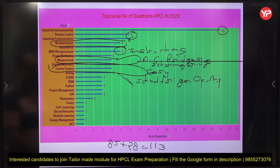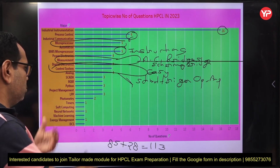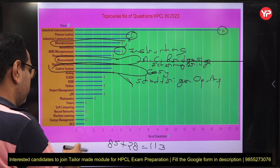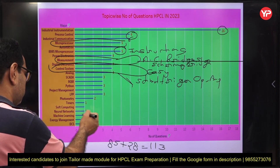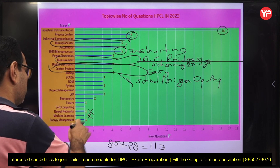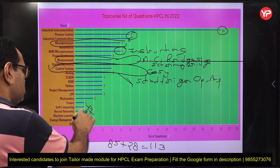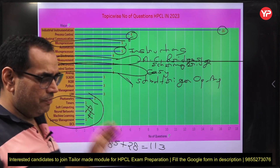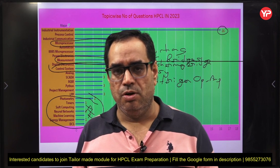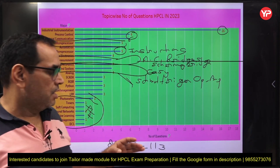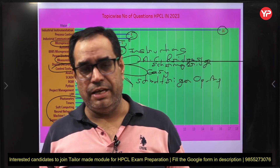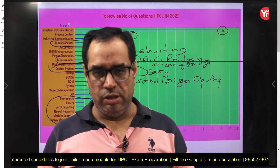SCADA is good to prepare since it's required in industry. For Python, it's a big subject so it's your choice. Don't go with machine learning — only one question and it's a vast subject. You can also ignore neural network and soft computing. Focus on the main topics discussed — follow this strategy and you will qualify the written exam. For instrumentation engineers, the non-tech module is ready with your PDA. All the best.